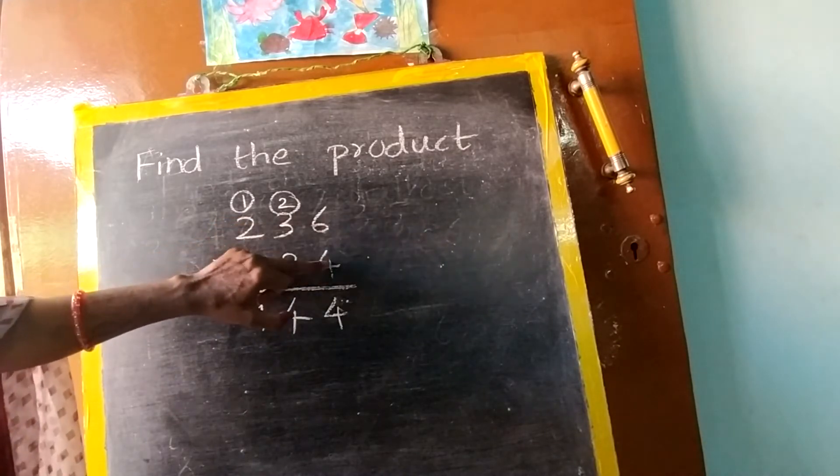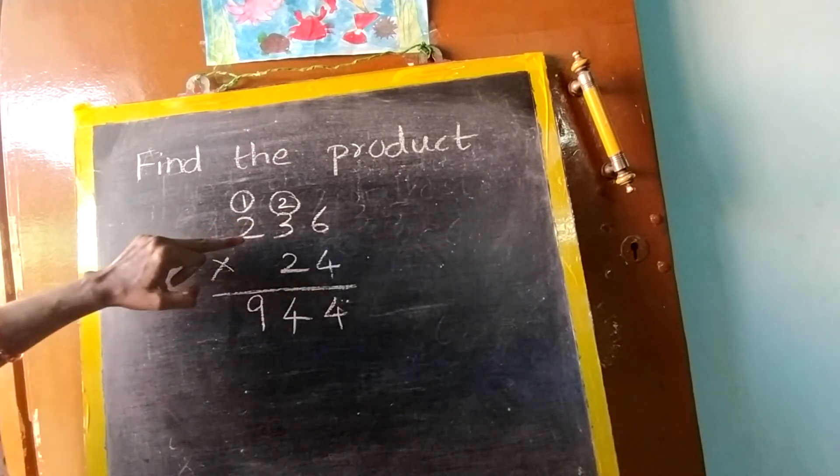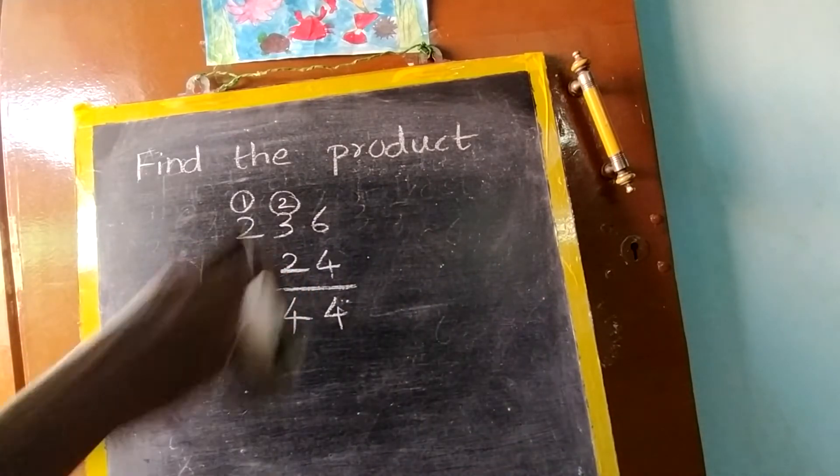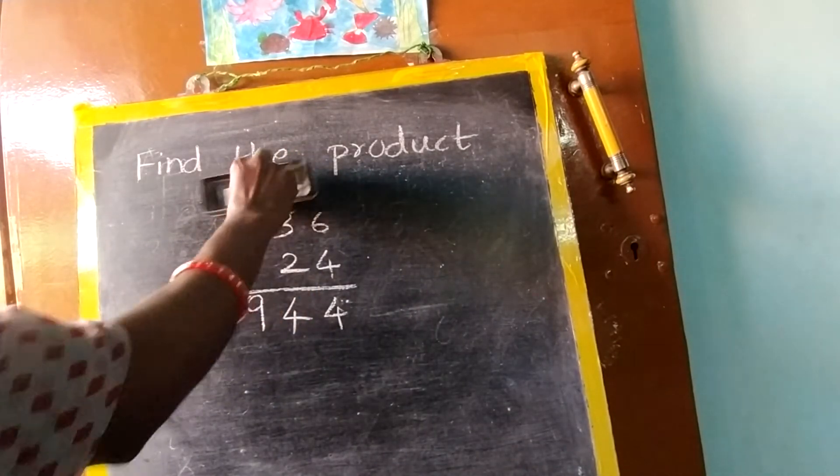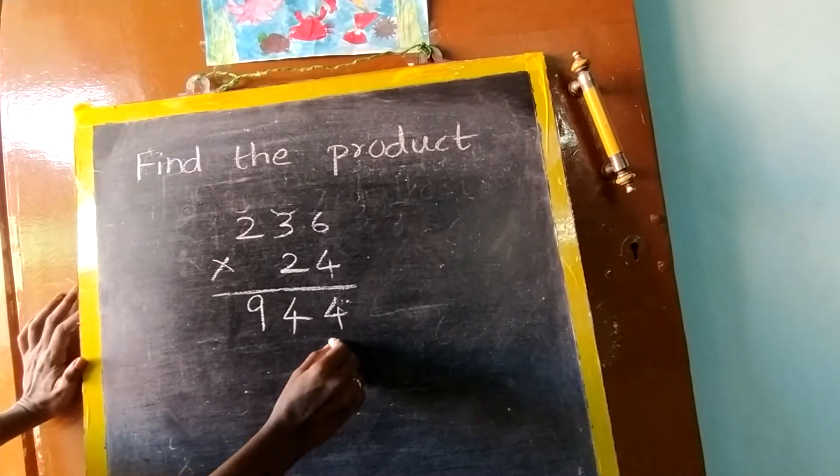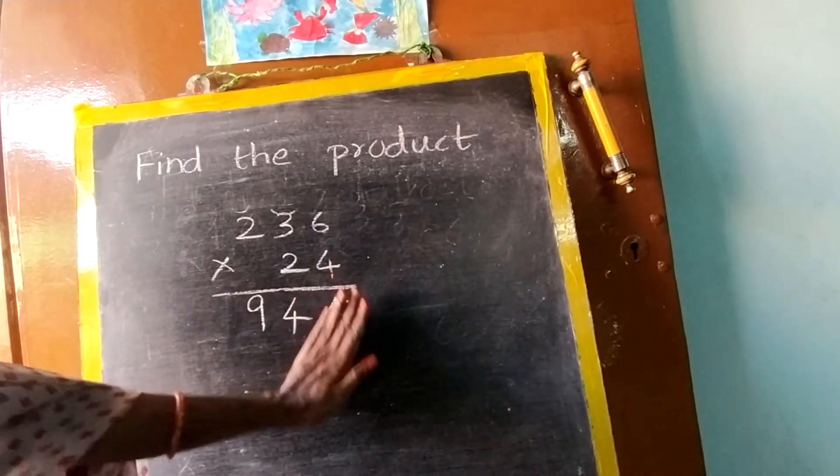First 2, 6's, then it will go to 10's, then it will go to 100's. This is over. Now you can erase this carry over because this is done. Now put a cross here because 1's place is over.